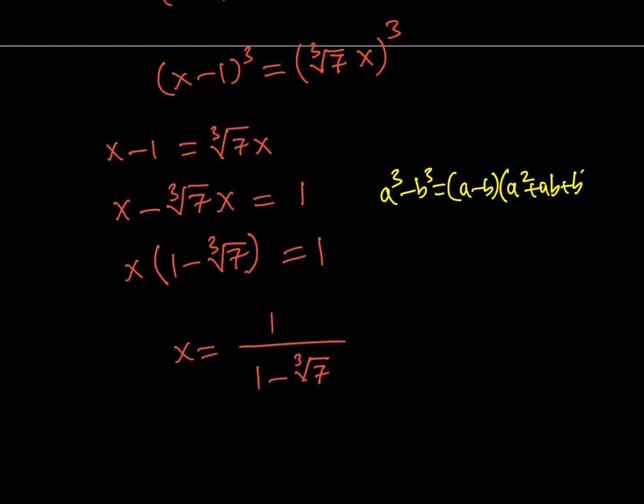So now I'm going to consider this to be my a minus b. So a equals 1, b equals the cube root of 7. So what I need to multiply it by then is going to be a squared plus ab plus b squared. Let's go ahead and form that term.